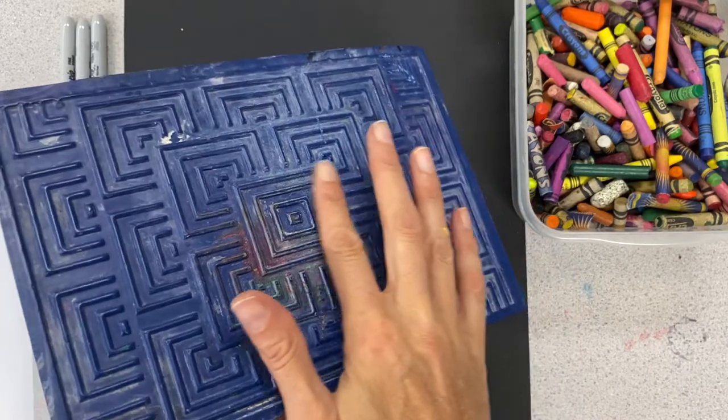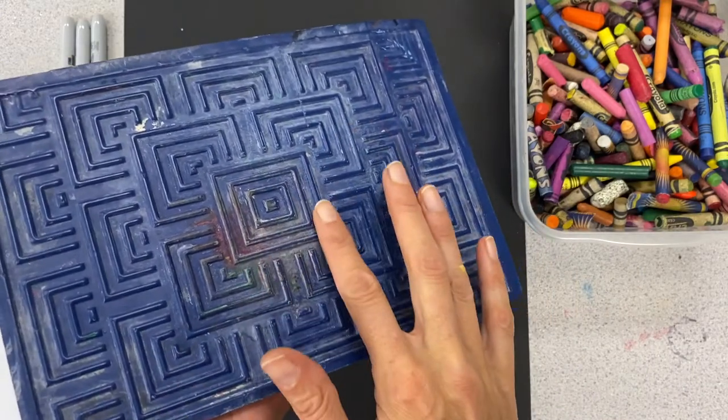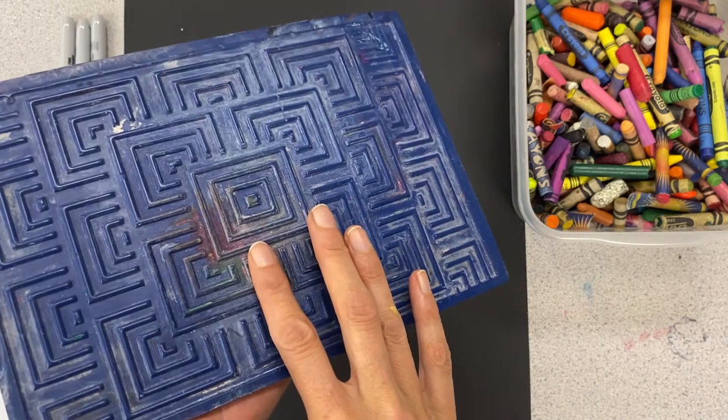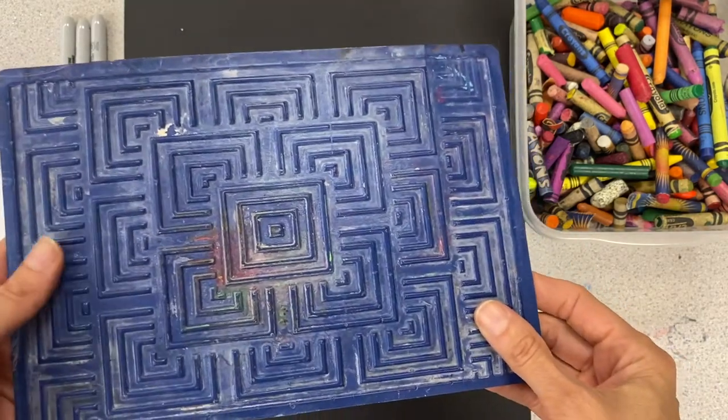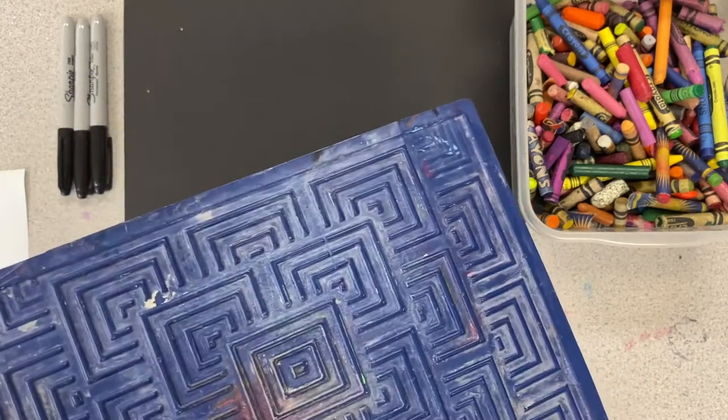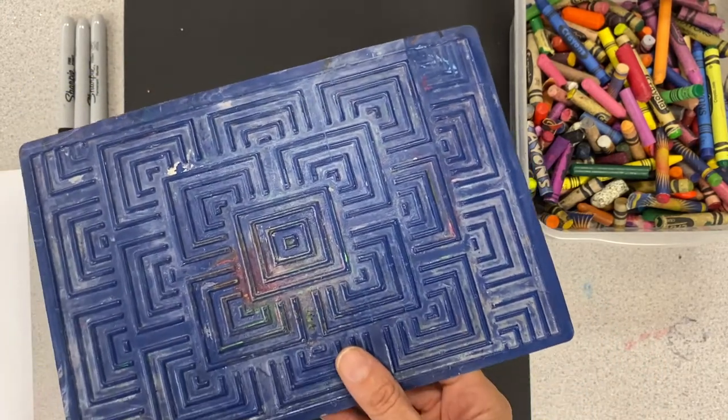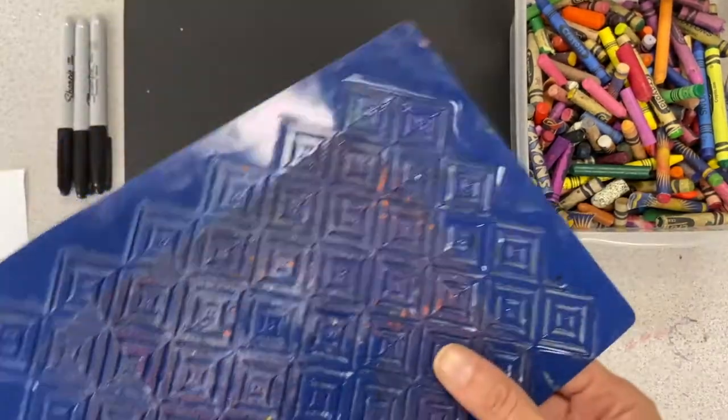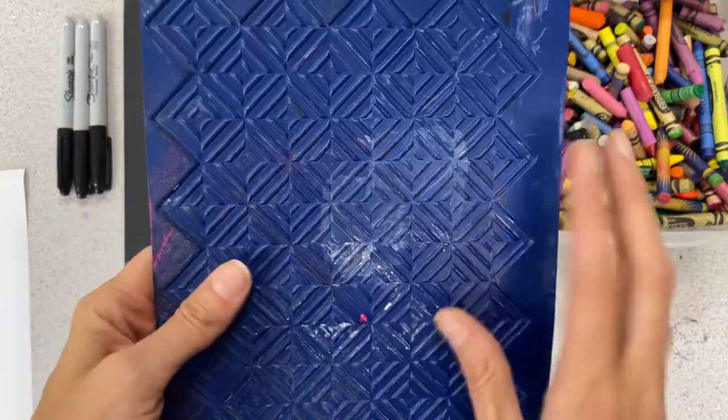A texture in art is the way something looks like it feels. Artists aren't really happy when people touch their artwork, paintings and whatnot. Some are, but in museums and stuff it's usually discouraged, so artists have to make art look like it feels a certain way.